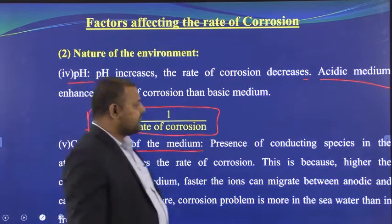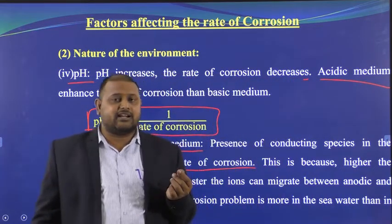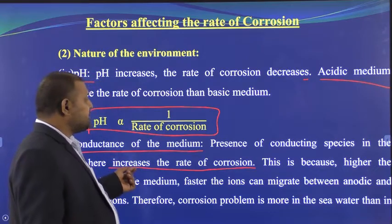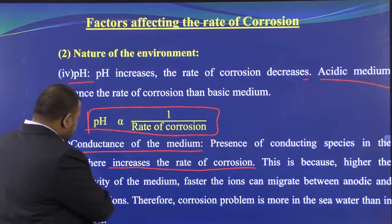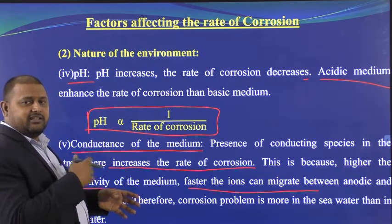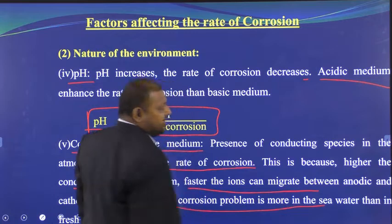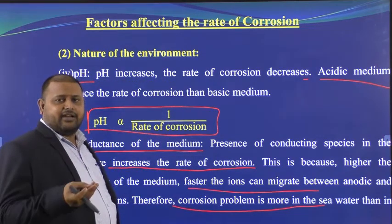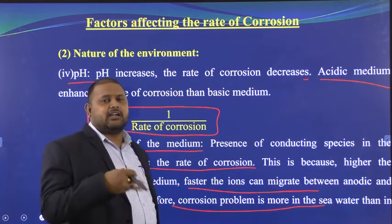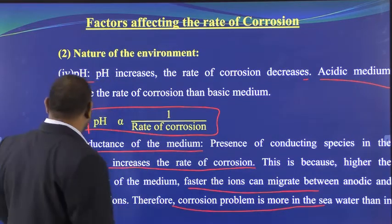Fifth, the conductance of the medium: if conductance is more, the rate of corrosion increases, because ions can migrate faster between the anode and cathode. Therefore, corrosion is greater in seawater — which contains dissolved salts (cations and anions) — than in fresh water.